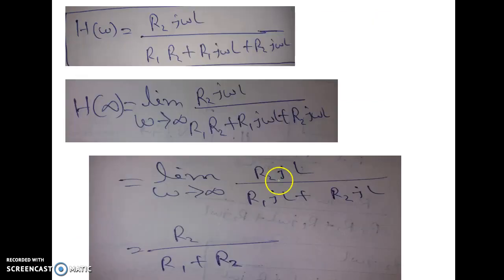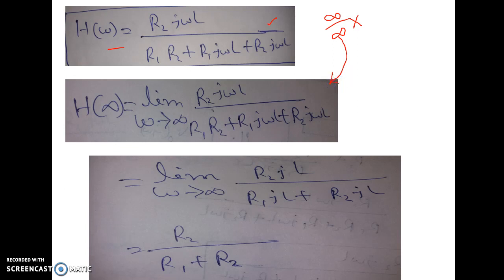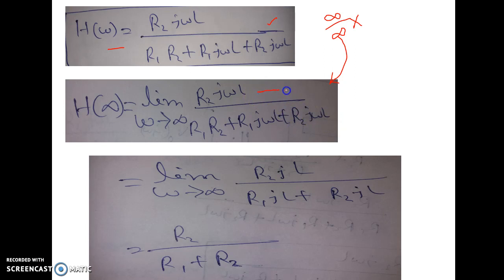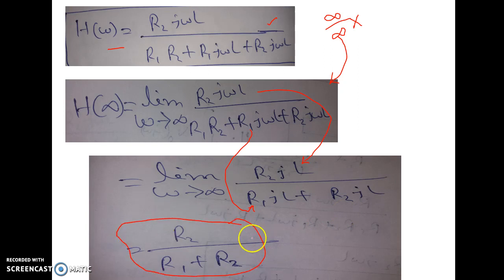To check H(∞), if we substitute ω equal to infinity directly we get infinity over infinity, so we apply L'Hôpital's rule. Taking the limit as ω tends to infinity of R2·jωL divided by (R1·R2 + R1·jωL + R2·jωL), we differentiate the numerator to get R2·jL, and the denominator to get R1·jL + R2·jL. Taking jL common, H(∞) equals R2 divided by R1 plus R2, which is not equal to zero.